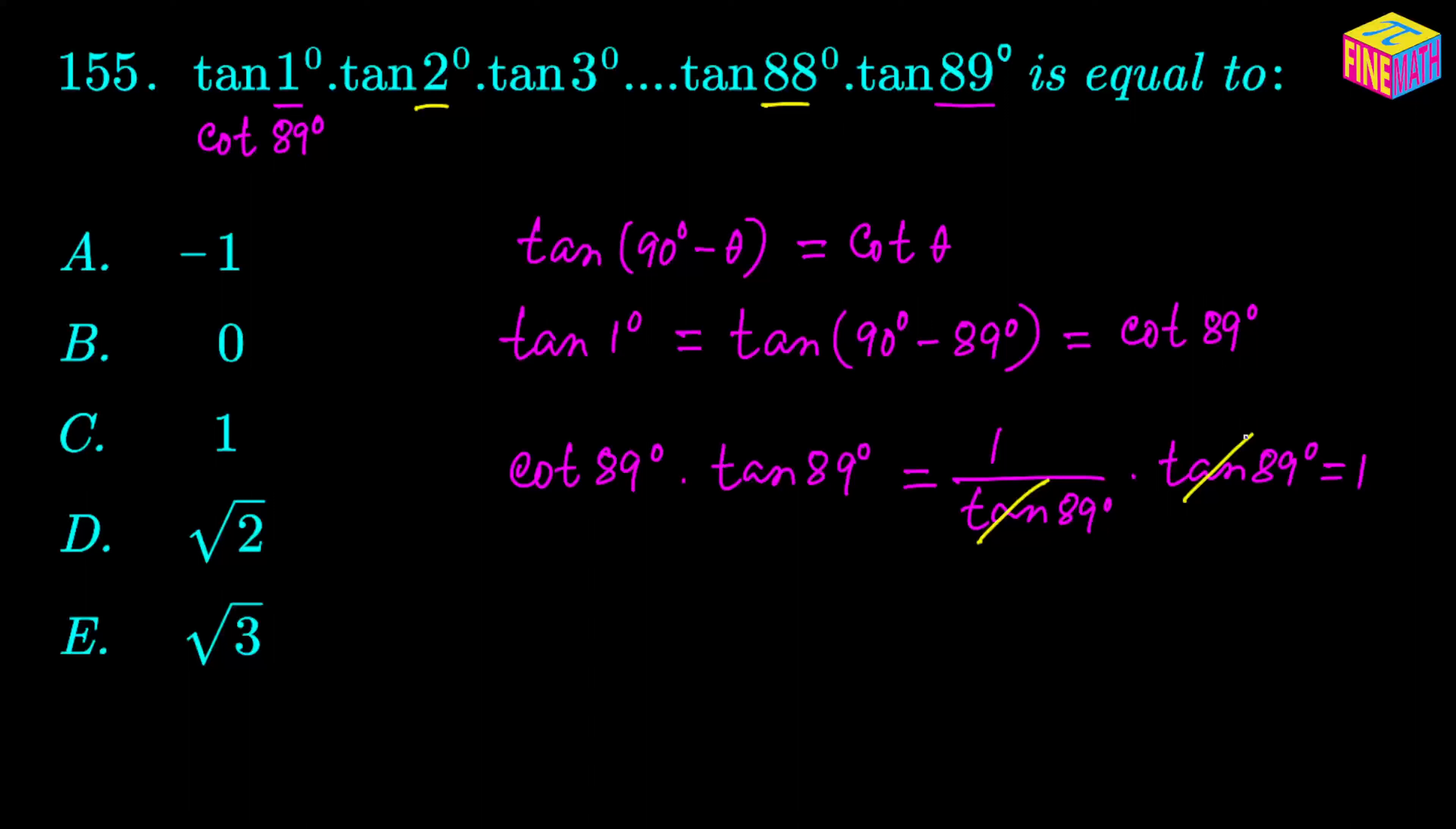So you can clearly see that we can create pairs of the factors which are eventually going to become 1. Now if you think about it, we can create pairs like this. We already saw the first pair, which is tangent of 1 degree times tangent of 89 degrees.